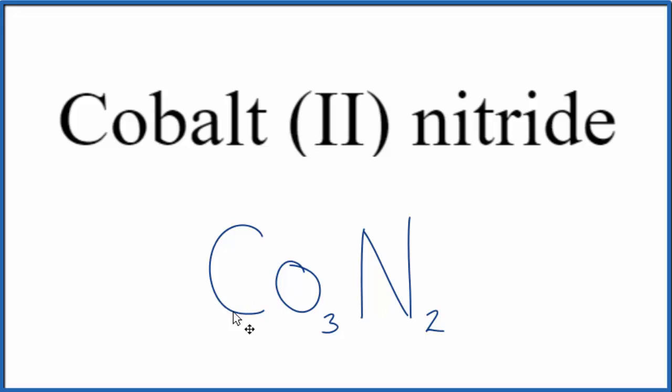Let's check our work though. We said cobalt, that would be a 2+, and we looked the nitrogen up, 3-. 3 times 2+ is 6+. 2 times 3- is 6-. These two numbers, they're going to cancel out, give us a net charge of zero.